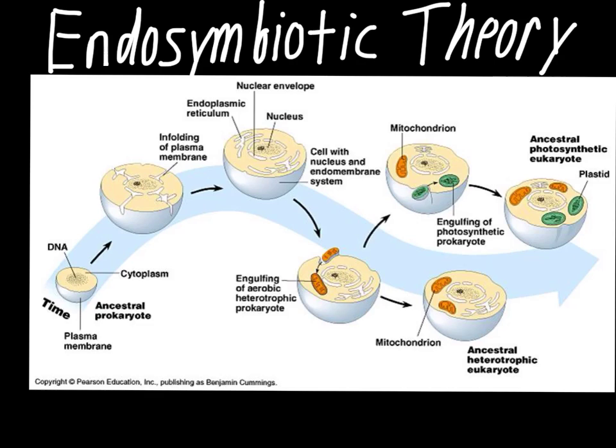So this theory breaks down how we went from prokaryotic cells to eukaryotic cells. In the last video of this chapter, we'll go over some ideas about where the first cell actually came from.